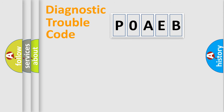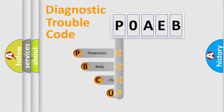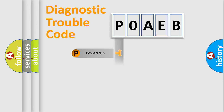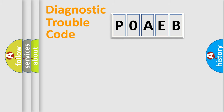First, let's look at the history of diagnostic fault code composition according to the OBD2 protocol, which is unified for all automakers since 2000. We divide the electric system of an automobile into four basic units: Powertrain, Body, Chassis, and Network. This distribution is defined in the first character of the code.